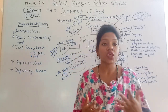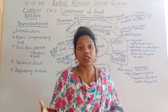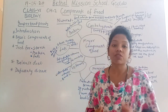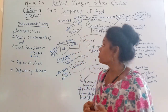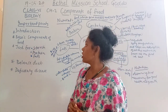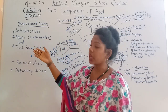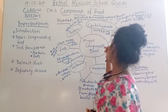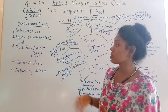Today in this chapter we are going to discuss some of the most important topics. First of all, the basic components of food — carbohydrates, proteins, fats, vitamins and minerals, and then water and roughage. These are the main basic components of food that we are going to discuss in this chapter.